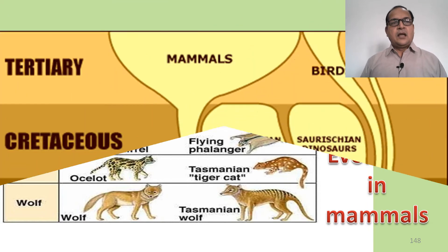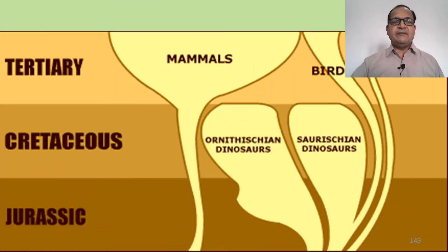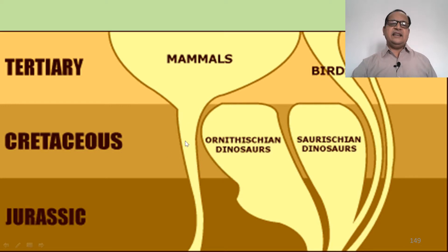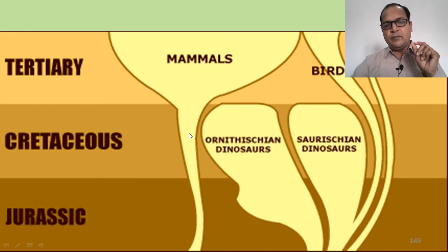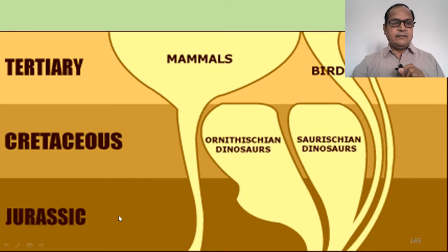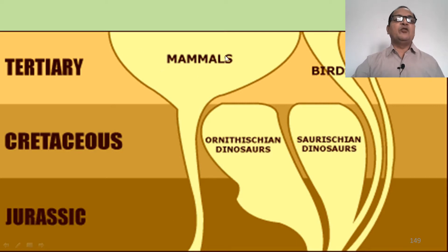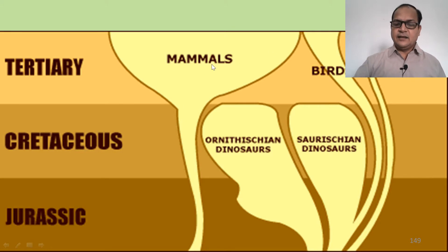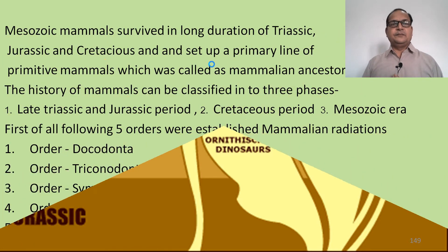This geological timescale shows the Jurassic and Cretaceous periods with the mammal lines. During the Jurassic and Cretaceous periods there were very small populations of mammals, but they flourished in the Tertiary or Cenozoic era.